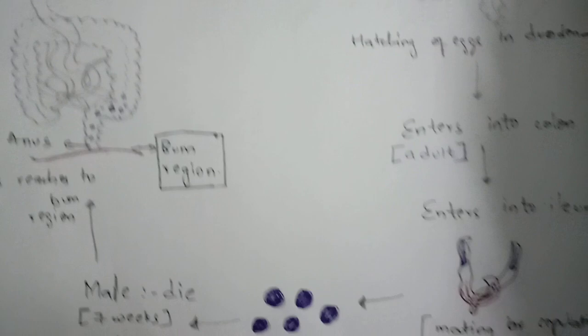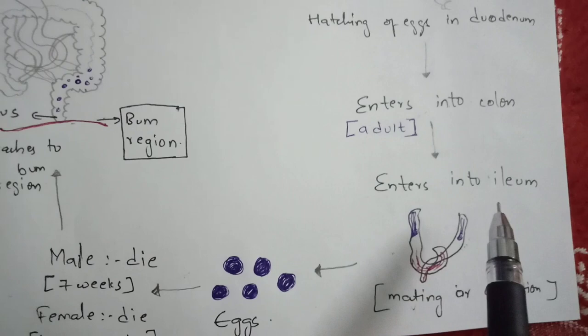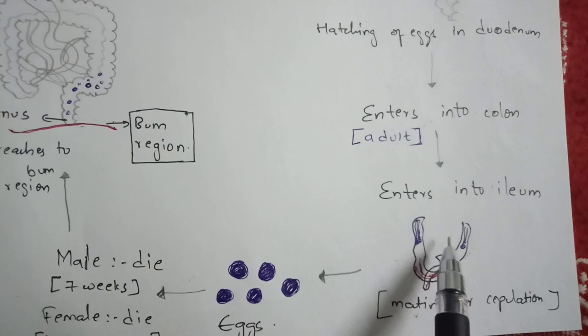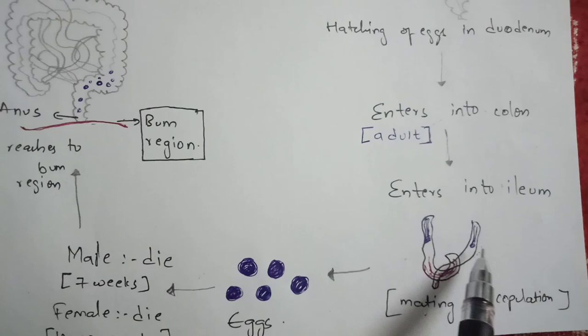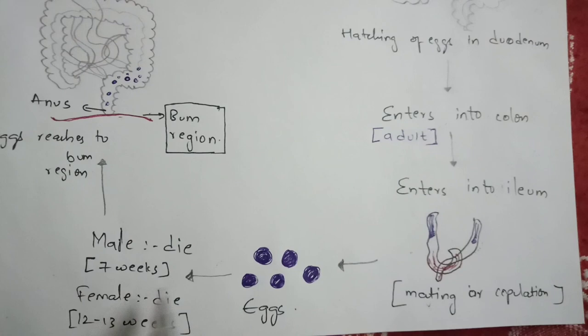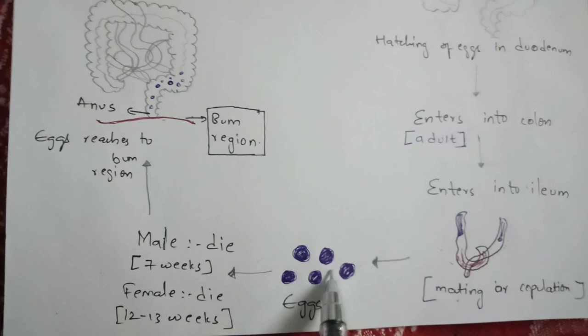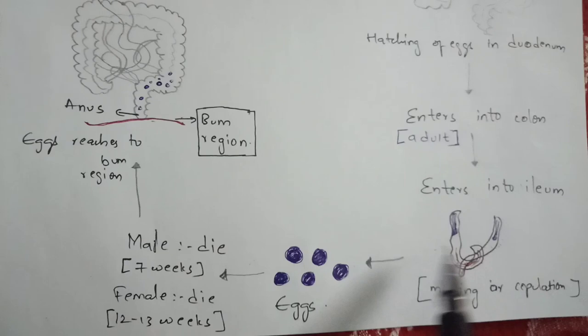From the colon, the worms enter the ileum, where copulation of male and female worms takes place. The sperm present in the testes of the male worm enter the ovaries of the female worm, resulting in the release of eggs. Immediately after releasing eggs, the male worm dies — having survived its seven-week lifespan.